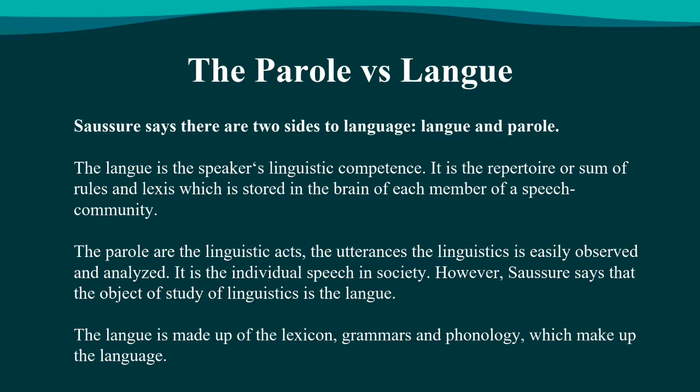The first dichotomy that we are going to see in this video is the difference between langue and parole, according to Saussure. Saussure says there are two sides to language: langue and parole. The langue is the speaker's linguistic competence. It is the repertoire or sum of rules and lexes which is stored in the brain of each member of a speech community.